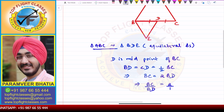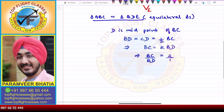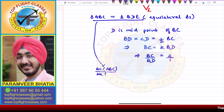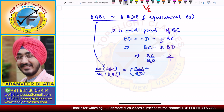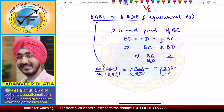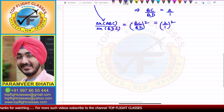Since the two triangles are similar, the ratio of their areas equals the square of the ratio of their corresponding sides. So the area of triangle ABC divided by the area of triangle BDE equals (BC/BD) squared, which is (2/1) squared.